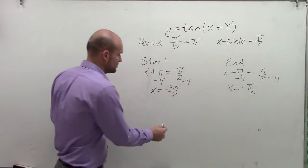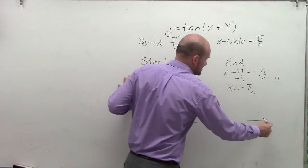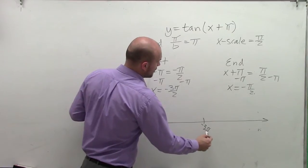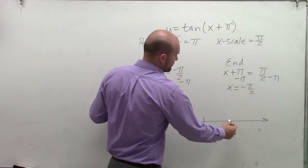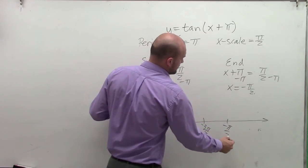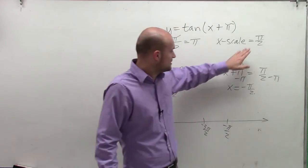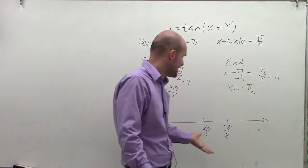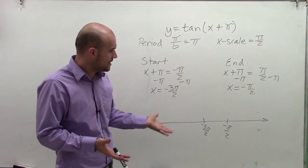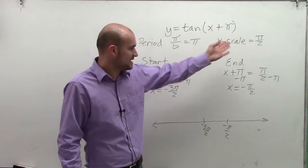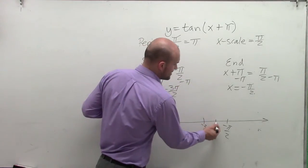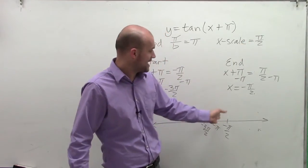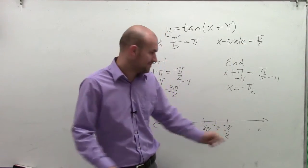So now to graph this function, I'm going to set my x-axis with my starting point at negative 3 pi over 2 and my end point at negative pi halves. However, I do notice that my x-scale is going to be pi halves. So if negative 3 pi halves plus pi halves, that's going to leave me with negative pi. And then if I add pi halves again, that's going to take me to negative pi halves.